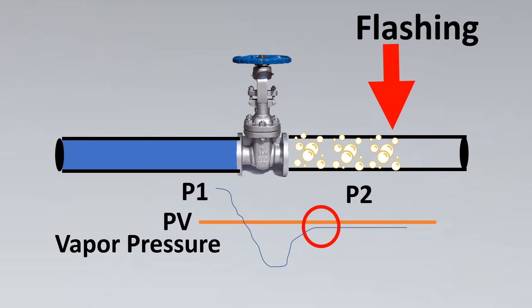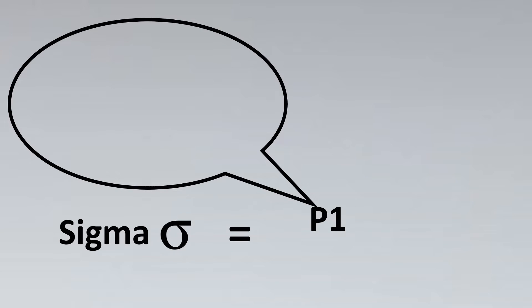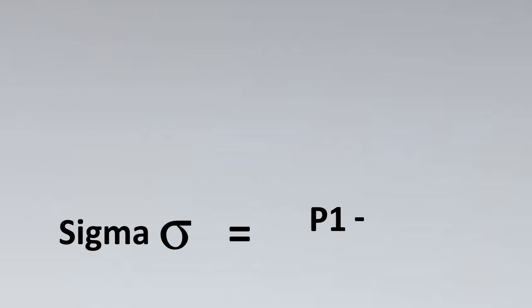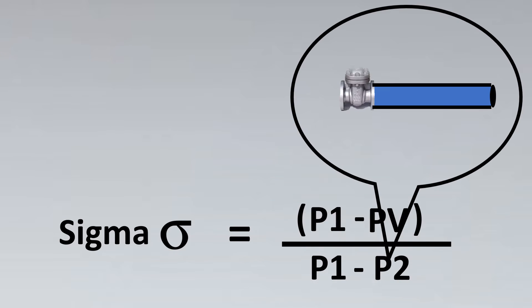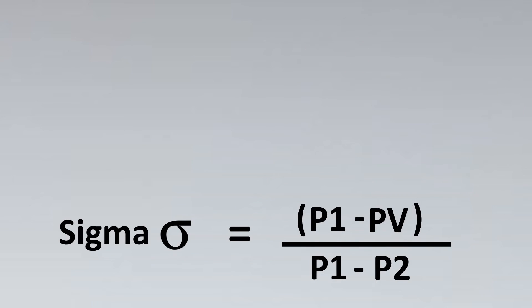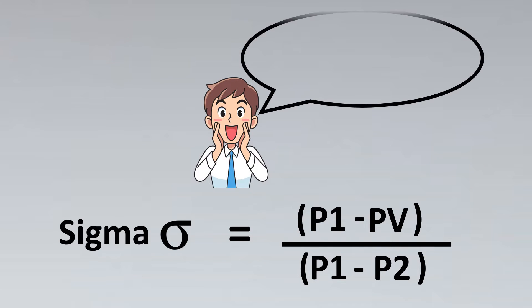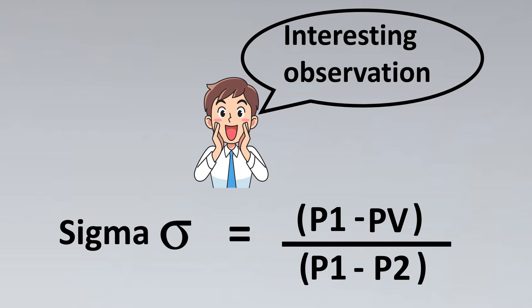Now let's get to this term. Cavitation index, which is also called sigma, is defined by ISA as follows: it is P1 (pressure upstream) minus PV (the vapor pressure) upon the pressure upstream minus the pressure downstream. This is the sigma value.